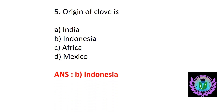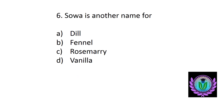Sowa is another name for — option A: dill, B: fennel, C: rosemary, D: vanilla. The answer is option A, dill. Sowa is another name for dill.